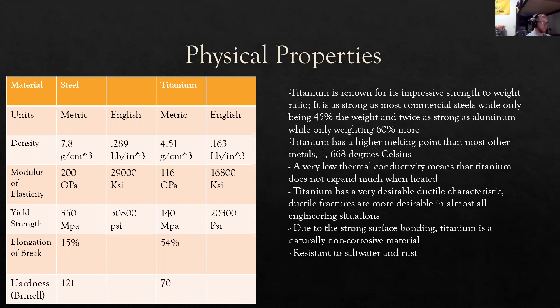This makes it very valuable in situations and environments where thermal expansion is not desirable and can lead to failure. Titanium has a very desirable ductile characteristic. In most engineering situations, a ductile fracture is preferable to that of a brittle fracture because a ductile fracture has more warnings before the actual fracture occurs. And due to the strong surface bonding of titanium, titanium is a naturally non-corrosive metal. This means that it is resistant to salt water and rust and won't corrode and weaken over time.